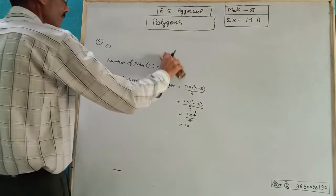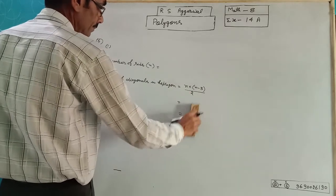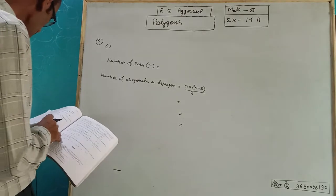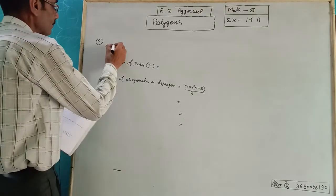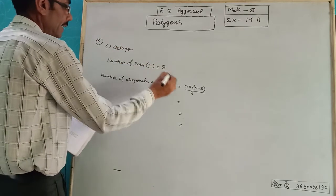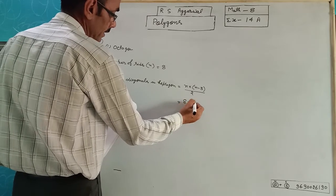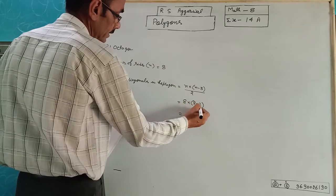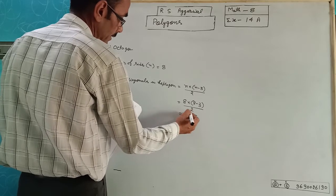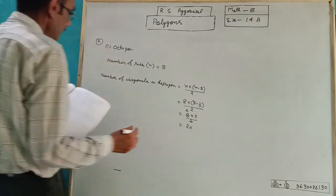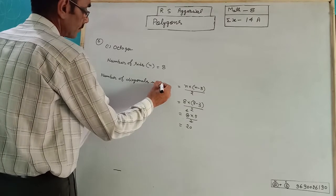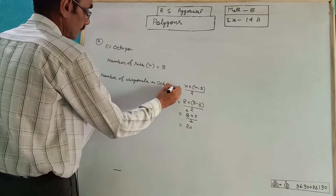Second part is octagon. Octagon has 8 sides. Using the formula: 8 into (8 minus 3) upon 2 equals 8 into 5 upon 2, which equals 20. The number of diagonals in octagon is 20.